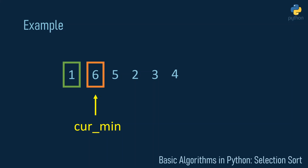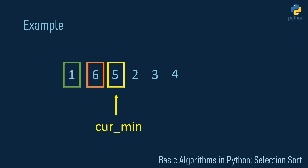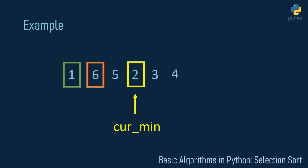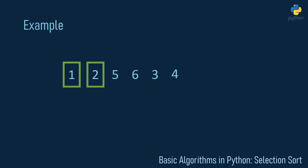Now one is at the beginning, which is the right place. In the second iteration we go on with the six and try to find the minimum of the unordered part by doing comparisons again. Five is less than six, so five becomes the current minimum. Then two is less than five, so two becomes the current minimum. Three and four are both greater than two, so nothing happens, and we swap two and six to bring two into the right position.